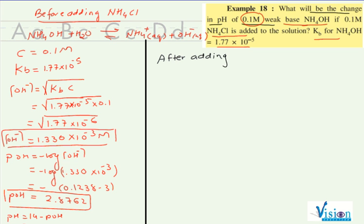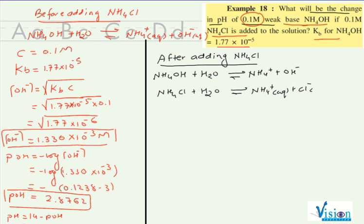After adding NH4Cl, two equations. We already had base: NH4OH plus H2O gives NH4 plus plus OH minus. And now we are adding NH4Cl. We get KB equals to concentration of salt into concentration of OH minus upon concentration of base. Do you remember this?